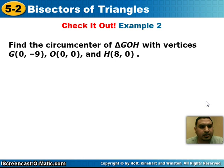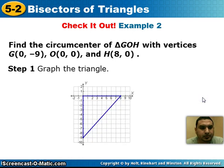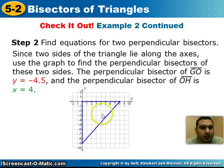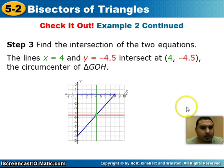Here's another example on a coordinate plane. The first step is to graph the triangle. Two sides of the triangle lie on the x and y axes. Looking at segment GO, that gives a horizontal line at y equals negative 4.5. Segment OH runs from 1 to 8, giving a vertical line at x equals 4. The circumcenter is at (4, negative 4.5).